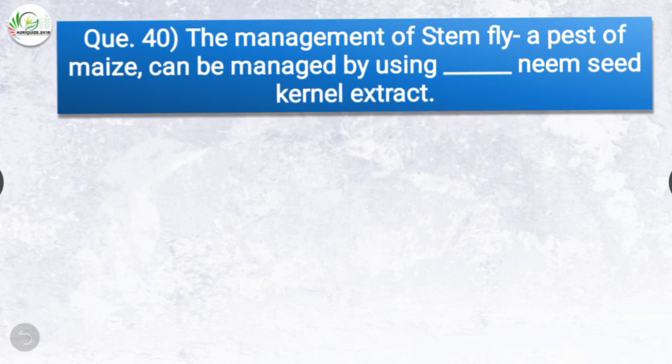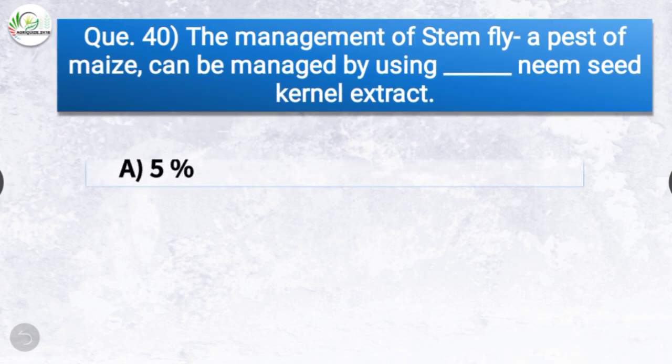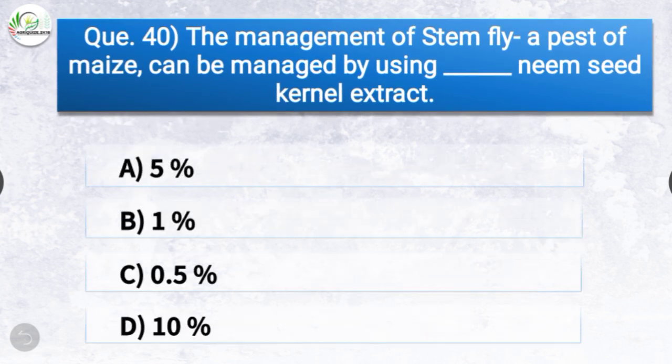Question number forty: The management of stem fly, a pest of maize, can be managed by using dash neem seed kernel extract. The options are 5%, 1%, 0.5%, or 10%. The correct answer is option A, 5% — the management of stem fly, a pest of maize, can be managed by using 5% neem seed kernel extract.